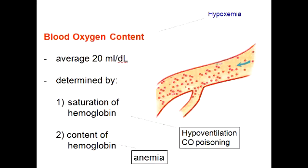One additional thing to note here is that cyanosis can result if deoxygenated hemoglobin is greater than 5 grams per deciliter.